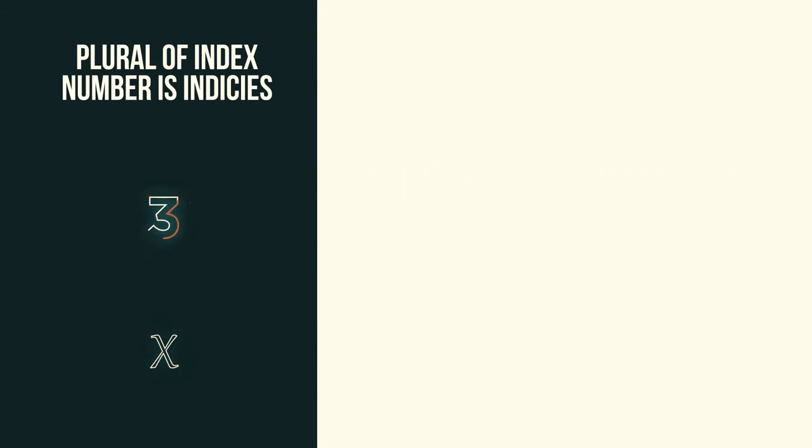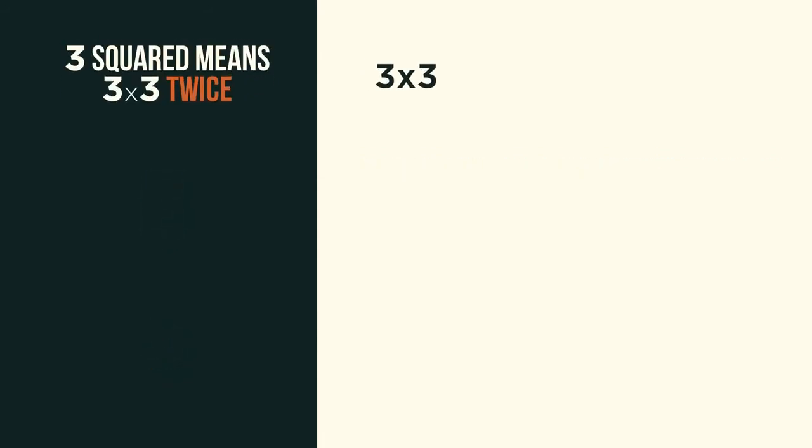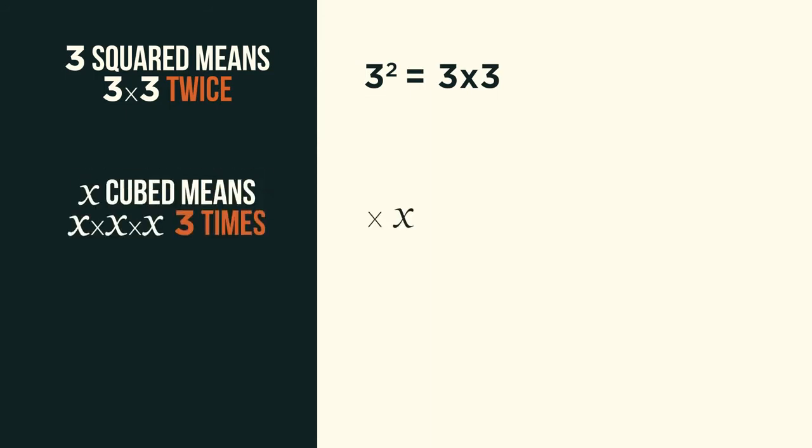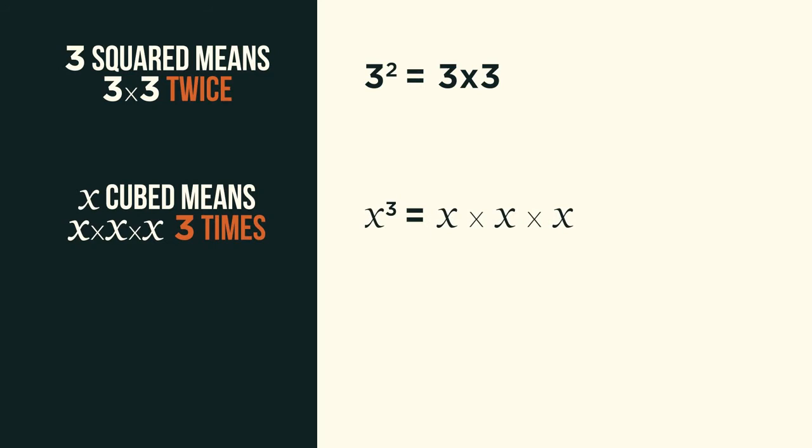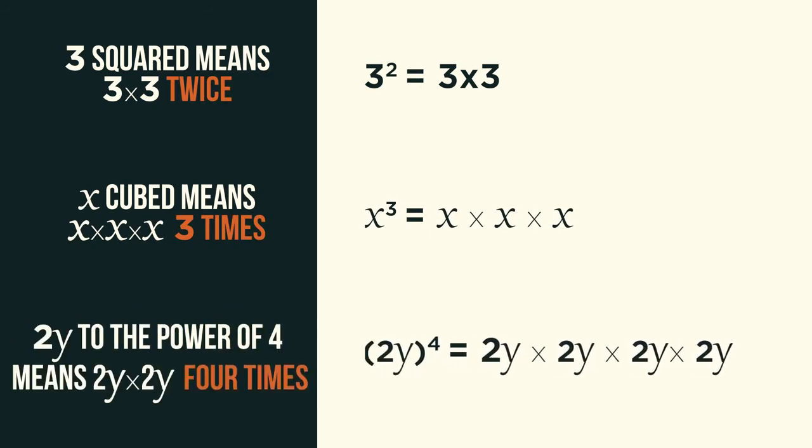So 3 squared means 3 multiplied by 3, twice. x cubed means x multiplied by x multiplied by x, so 3 times. And 2y to the power of 4 means 2y multiplied by 2y, 4 times.